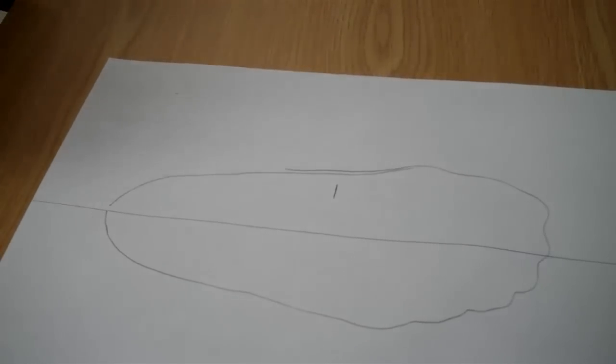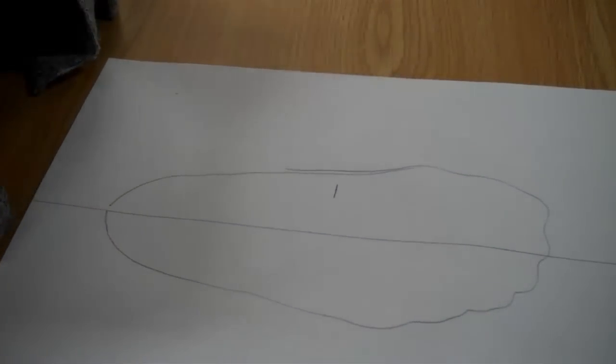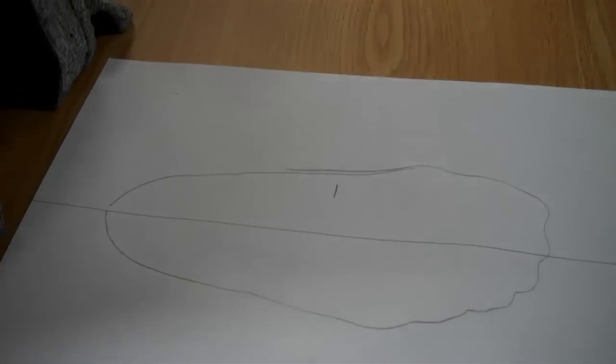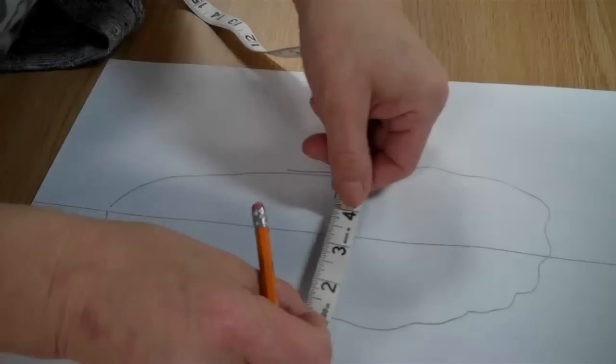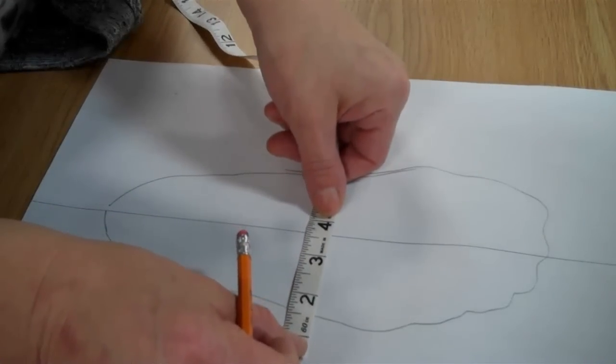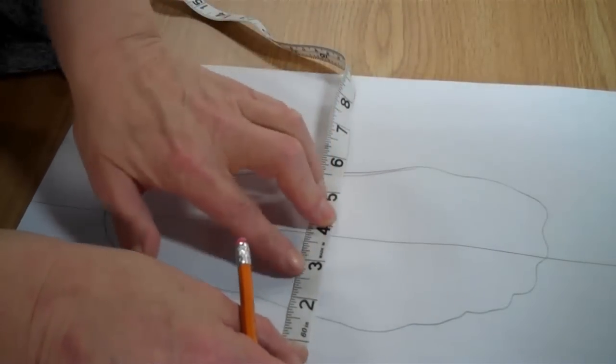So half of seven and a half is three and three quarters of an inch. So you're going to mark that on your pattern.